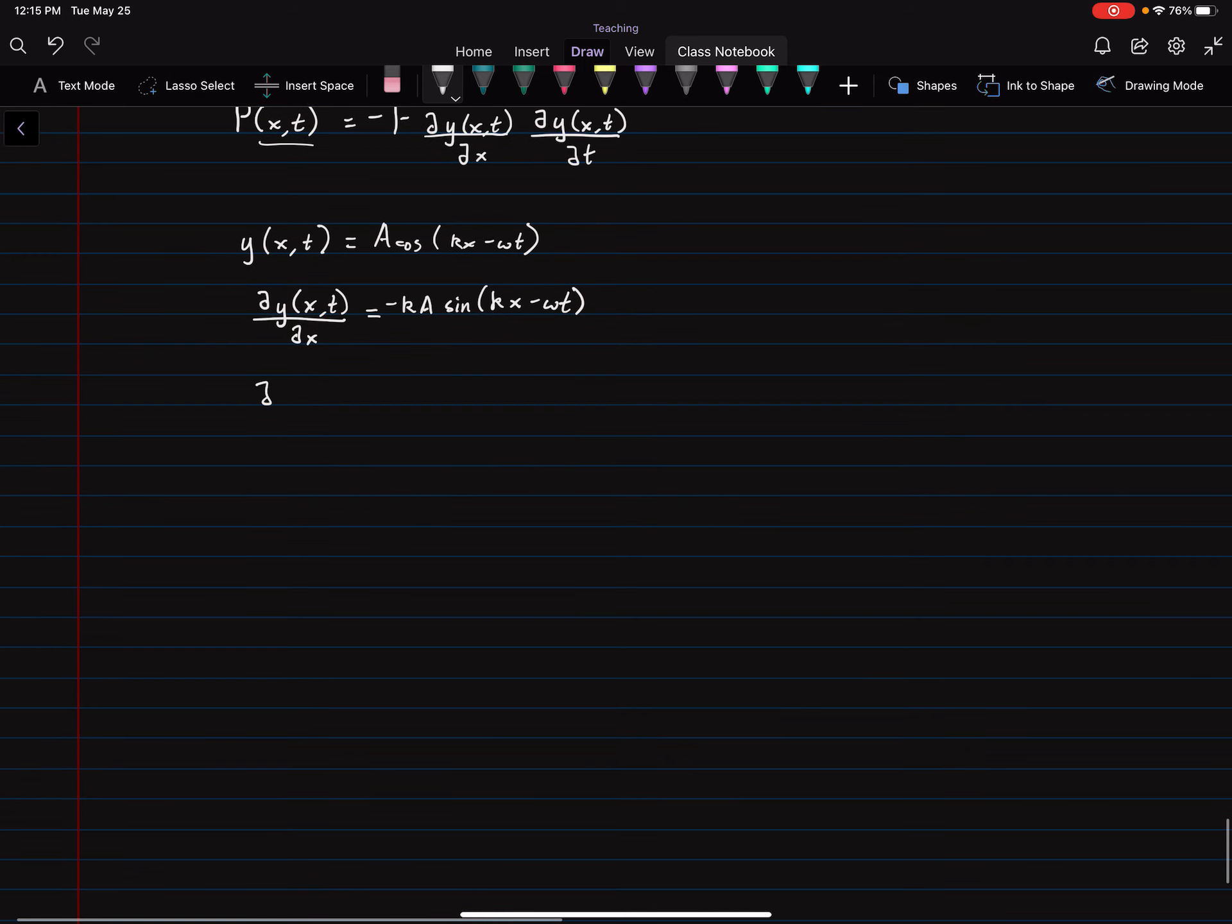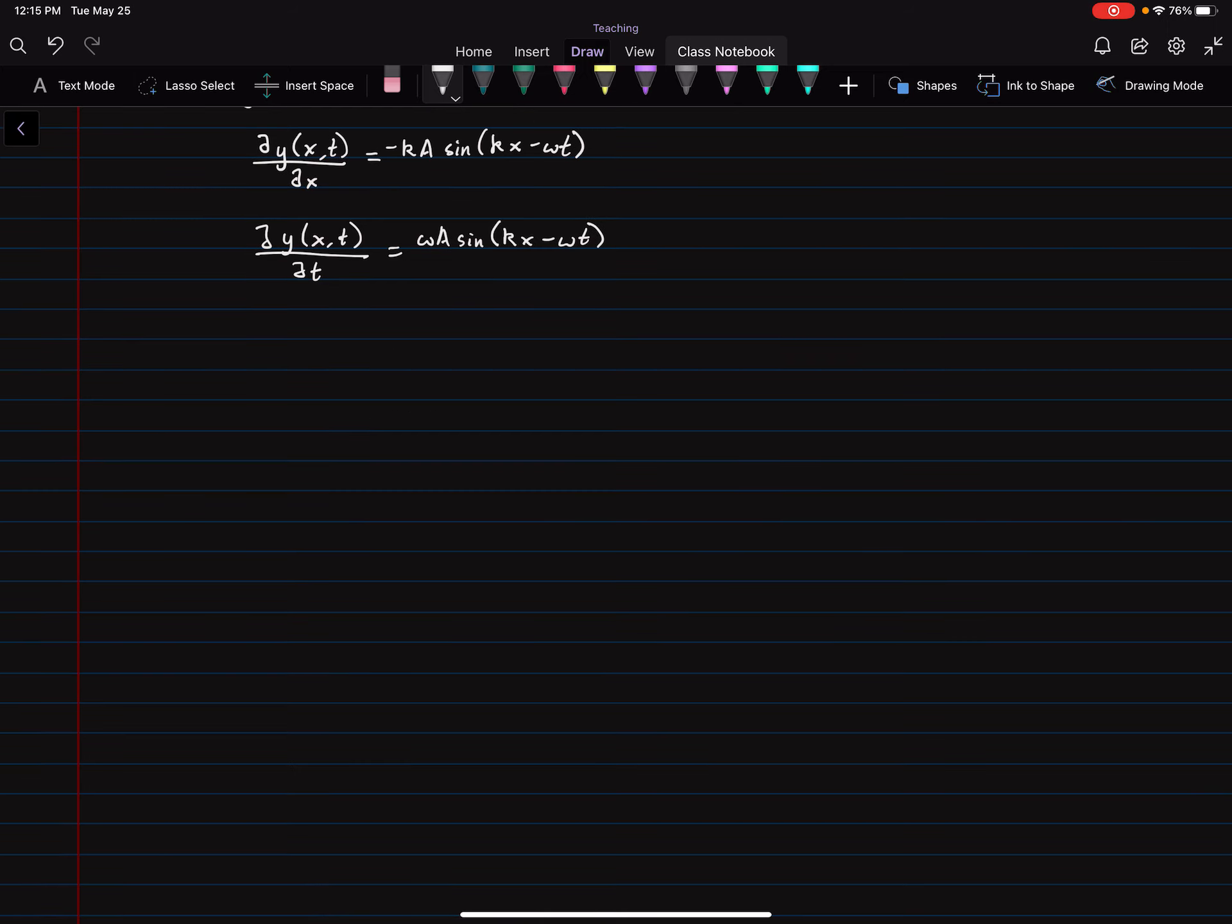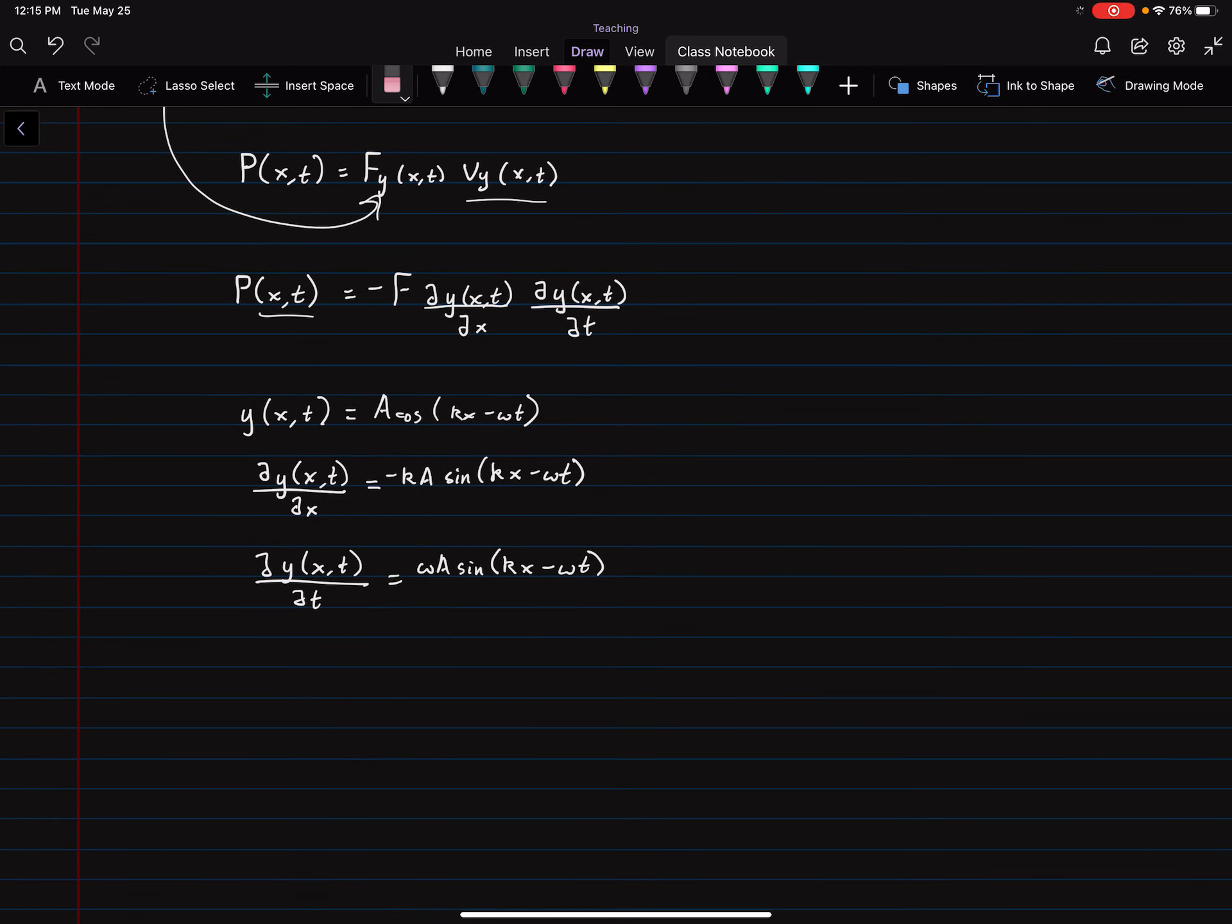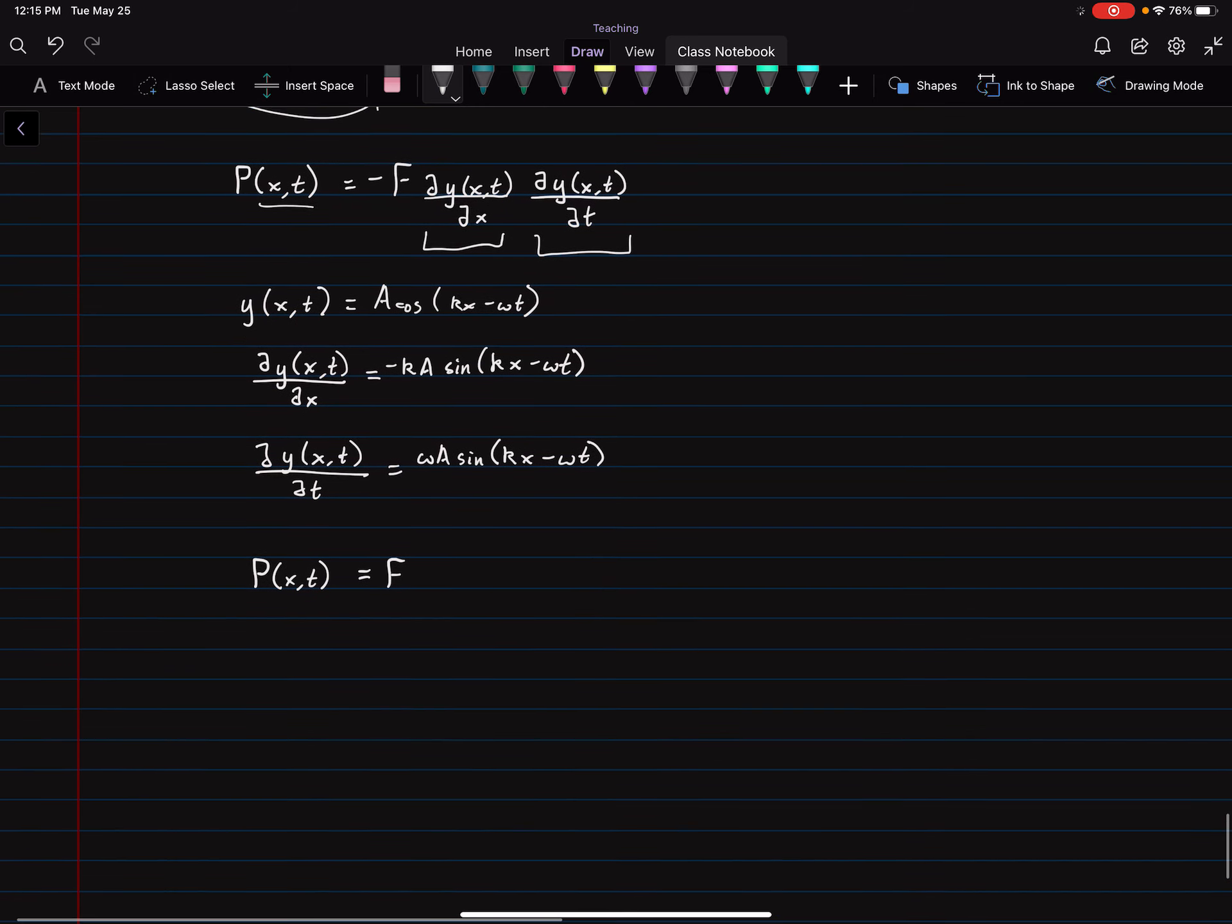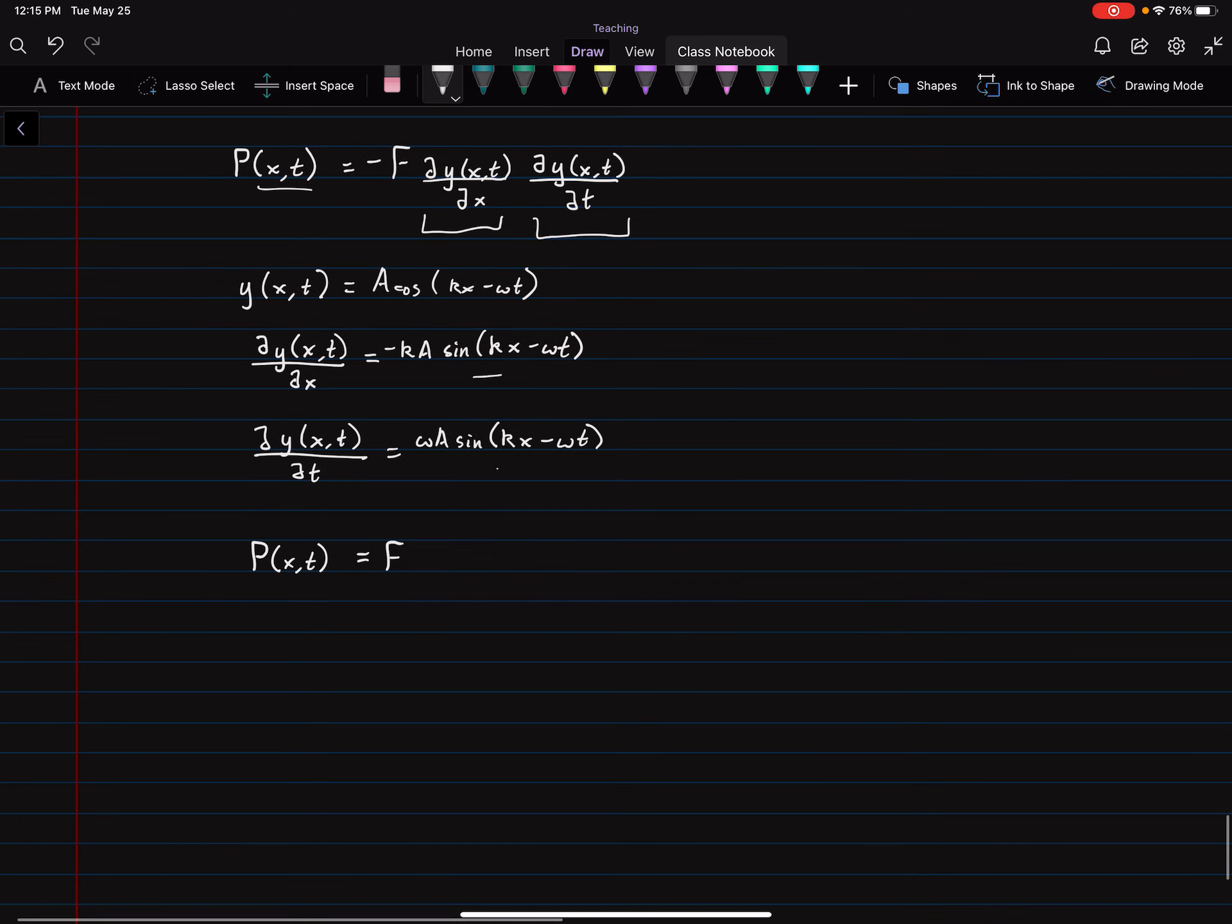Also, if you take a derivative of Y with respect to T, you have omega A sine KX minus omega T. And I won't continue with the second derivatives, but we're going to need these in here for the power because I'm just writing out these here to stick into the power equation.